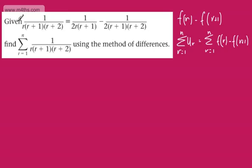In this question, given that 1 over r(r+1)(r+2) is identical to 1 over 2r(r+1) minus 1 over 2(r+1)(r+2), we need to find the sum from r=1 to n of 1 over r(r+1)(r+2) using the method of differences.